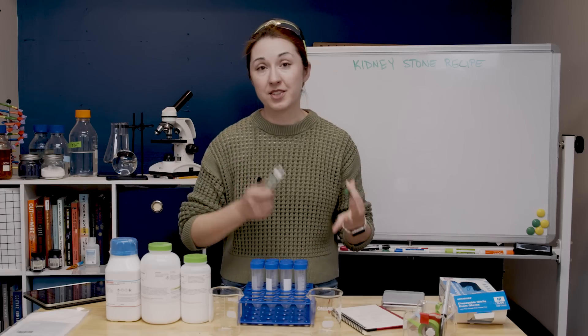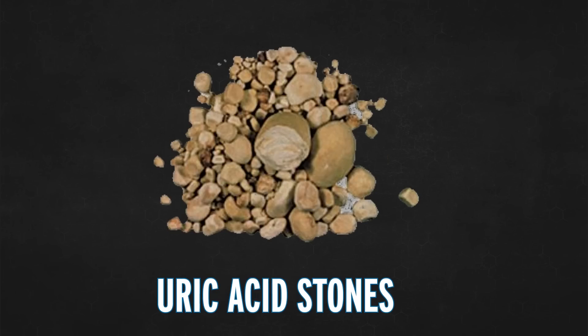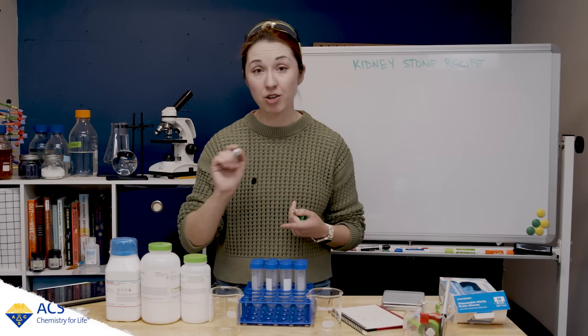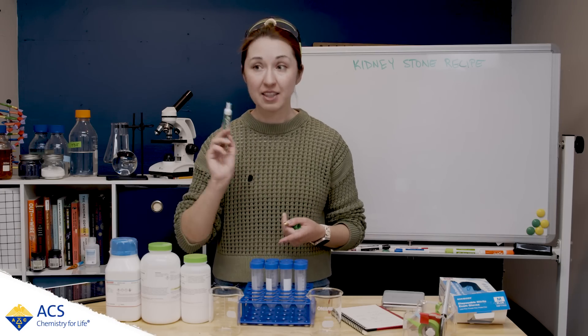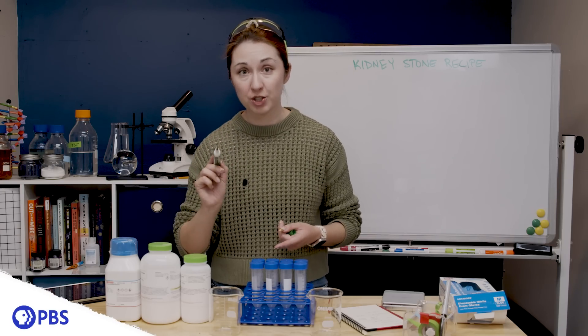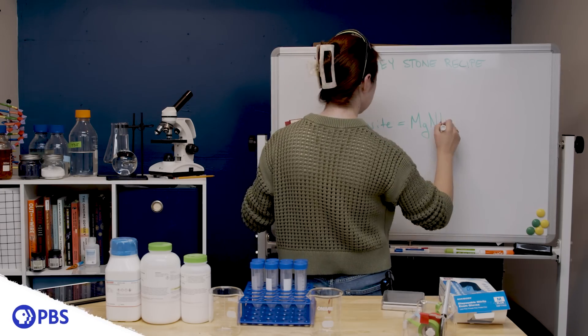Kidney stones come in a couple of different types. You have calcium stones, you have uric acid stones, you have cysteine stones, and you have struvite stones. All of those describe what it's made out of, and so yes I also did wonder what struvite was, so let me show you that.